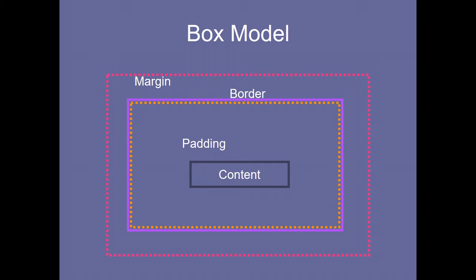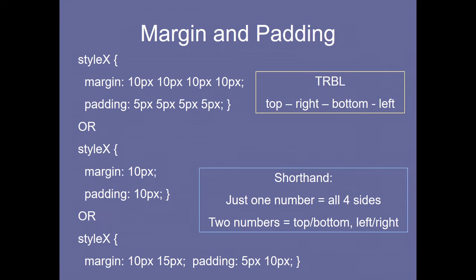The border is the outside boundary of the room. Coming to margin — it is very simple. One box and another box: how much space you want to keep between them. One room and another room, if you give space that is the border; one house and another house, you can give some space — that is called the margin.